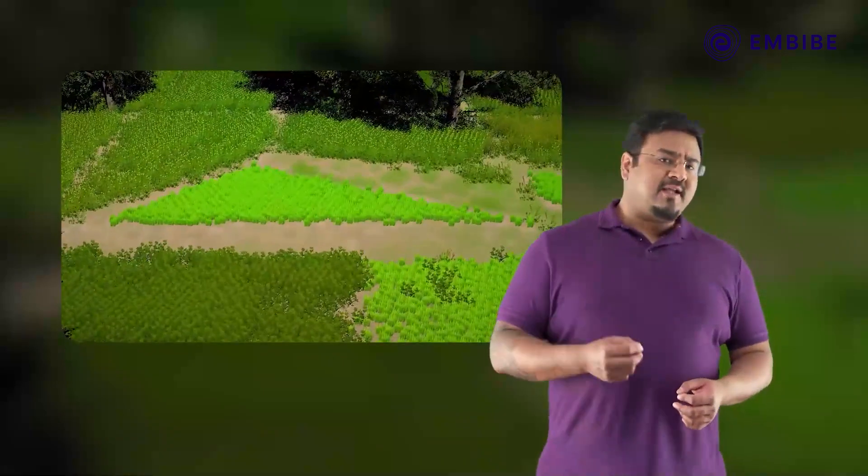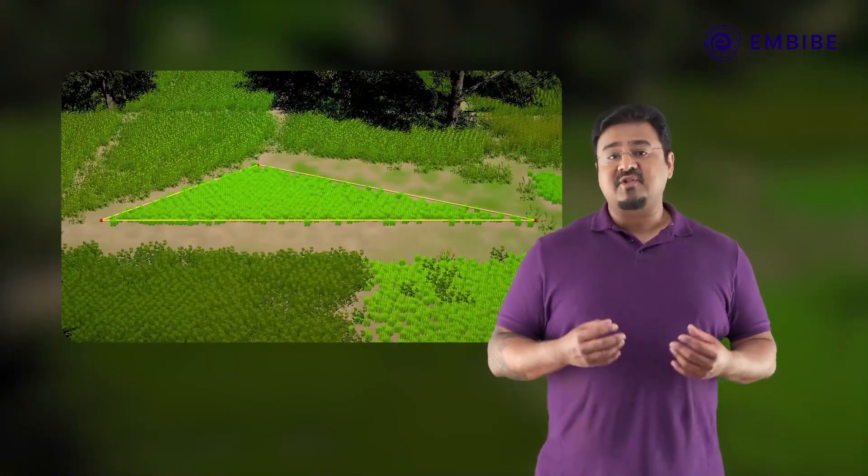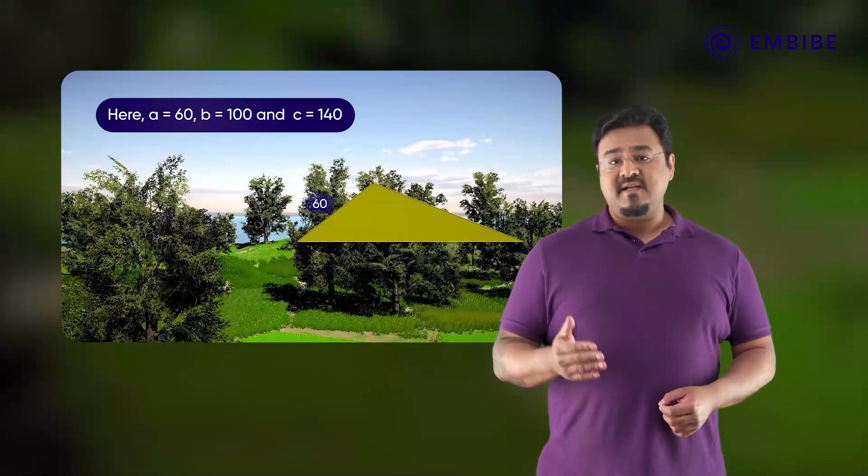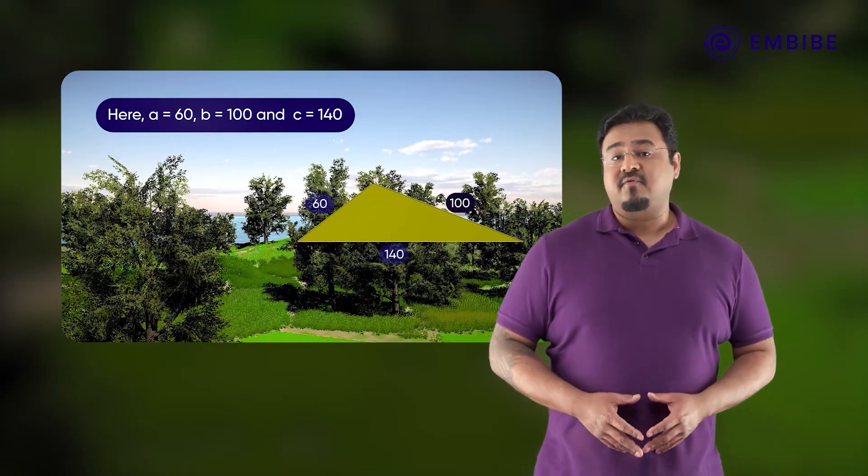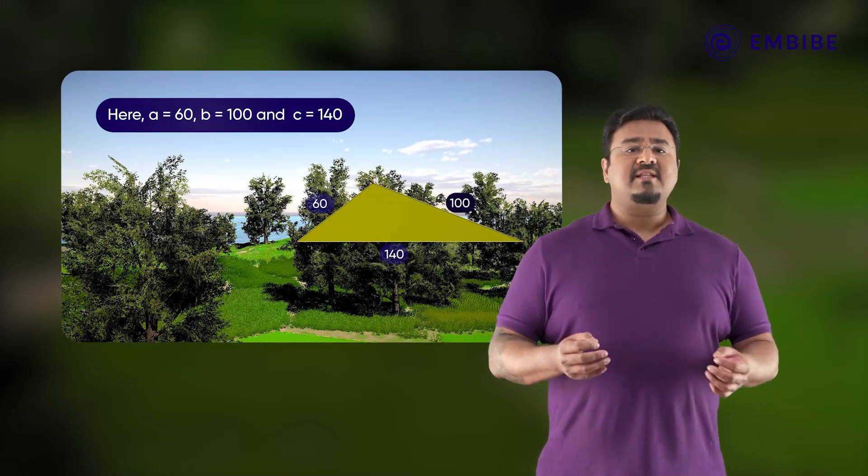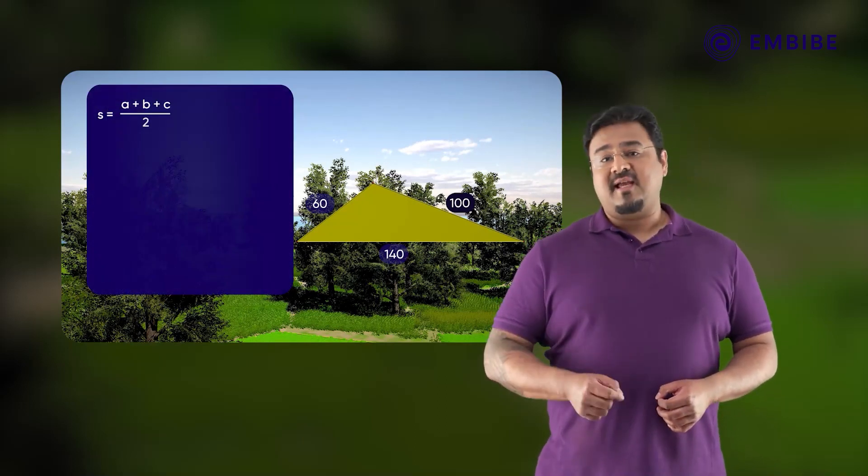Look at this triangular-shaped field. Its dimensions are 60 meters, 100 meters, and 140 meters. Let's find its area using Heron's formula.